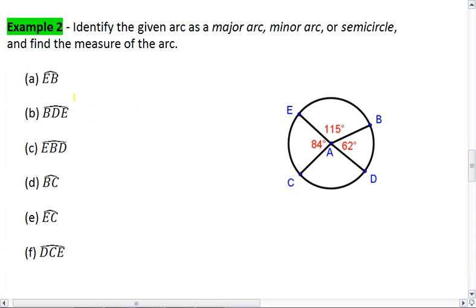Let's look at arc EB first. That's the shortest distance from E to B, and that's going to be 115 degrees.